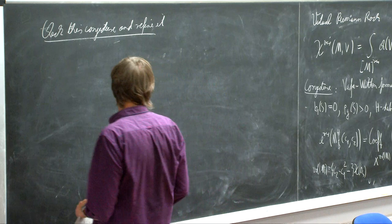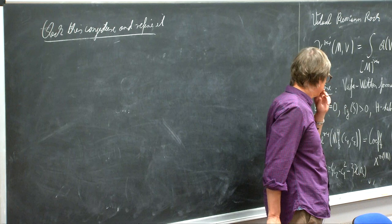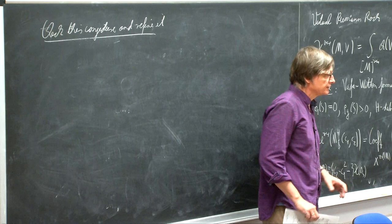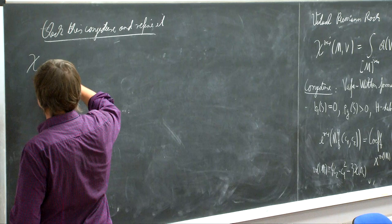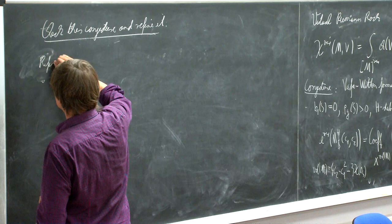Maybe I can first look at the refinement. What would be a refinement? The Euler number is more or less the coarsest topological invariant you can assign to a topological space, so you can look at finer invariants. One particularly nice one to look at is the chi-y genus.